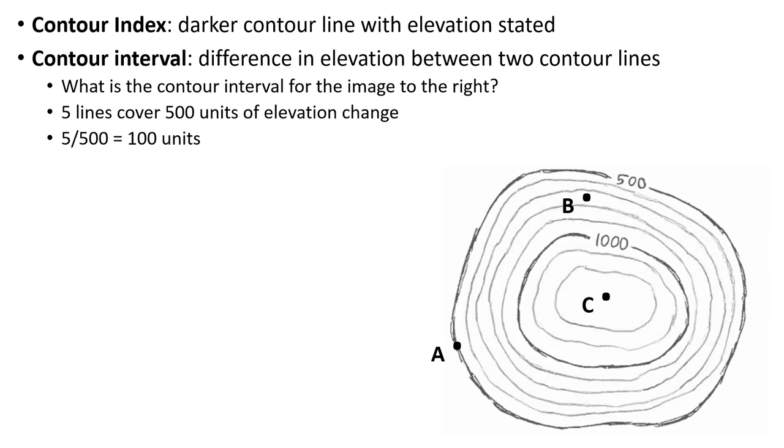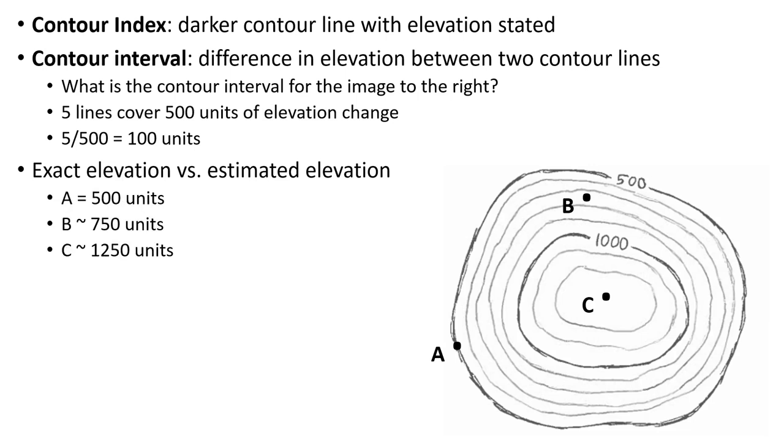We can then note differences between knowing what an elevation is exactly versus only being able to estimate an elevation based on where that location falls - between two contour lines or exactly on a contour line. In our cases here, for A, B, and C, these locations, remember that if a point falls exactly on a line, we do know its exact elevation because anywhere along a contour line has that exact elevation. For point A, we know it's at 500 units - feet, meters, whatever you want to call it - because it falls exactly on that line.